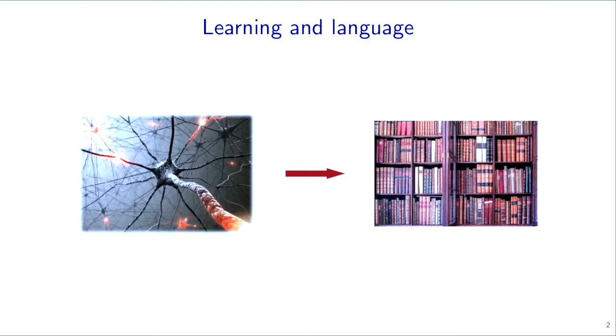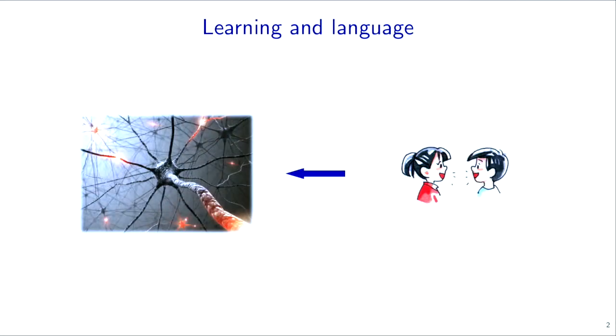But in this talk I want to explore a different idea: can we turn the tables around and think about what language can do for machine learning? We have to think about language as not simply passive text that exists on the internet waiting to be analyzed. We have to go back to the roots of where language came from — a communication system that humans developed or evolved as a way to survive.